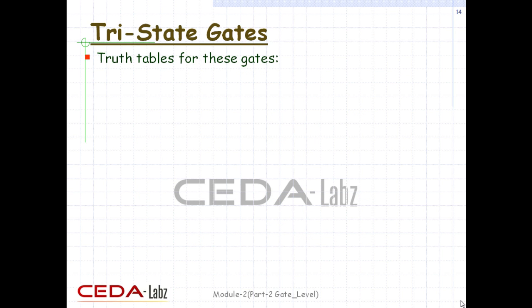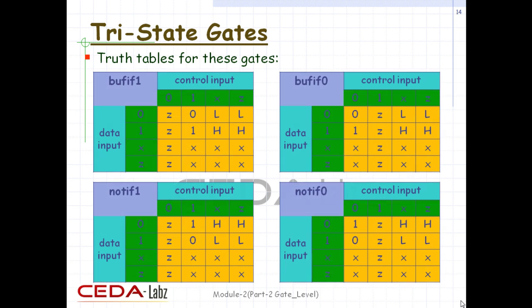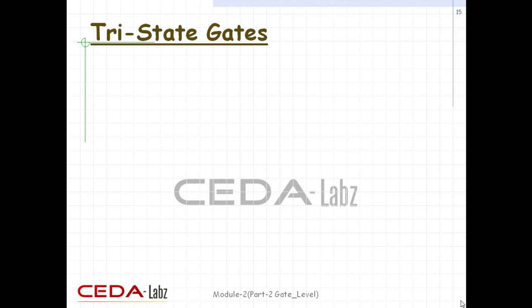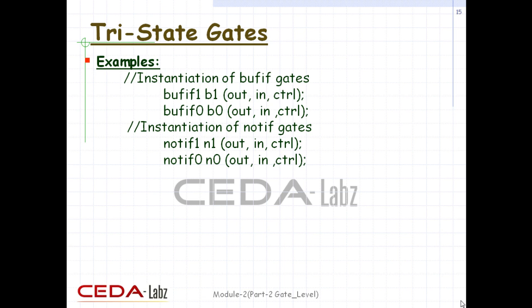The truth tables for these gates use special symbols L and H. The L symbol means that the output has a 0 or Z value. The H symbol means that the output has a 1 or Z value. Any transition to H or L is treated as a transition to X. These examples show instantiation of bufif1, bufif0, notif1, and notif0 gates.